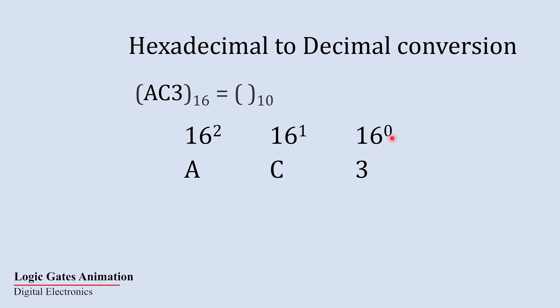So now let's multiply 16 to the power 0 into 3 that is 1 into 3. Now I will go for the next number 16 to the power 1 into C. Now can we multiply 16 into C that is not possible.